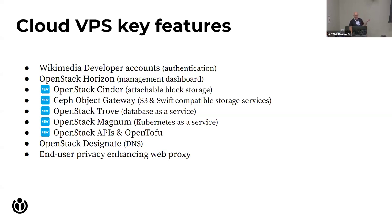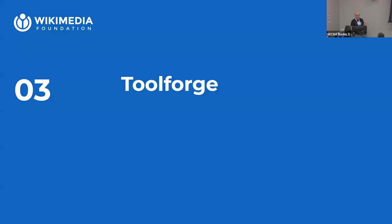OpenStack's DNS-as-a-service gives every project both internal and external DNS zones, so you have control and autonomy about how you expose your stuff to the internet. A lot of CloudVPS projects run web services, and to conserve public IP addresses and enhance end-user privacy, we have a reverse proxy service you can configure through the Horizon dashboard or OpenTofu to expose your particular websites to the internet.